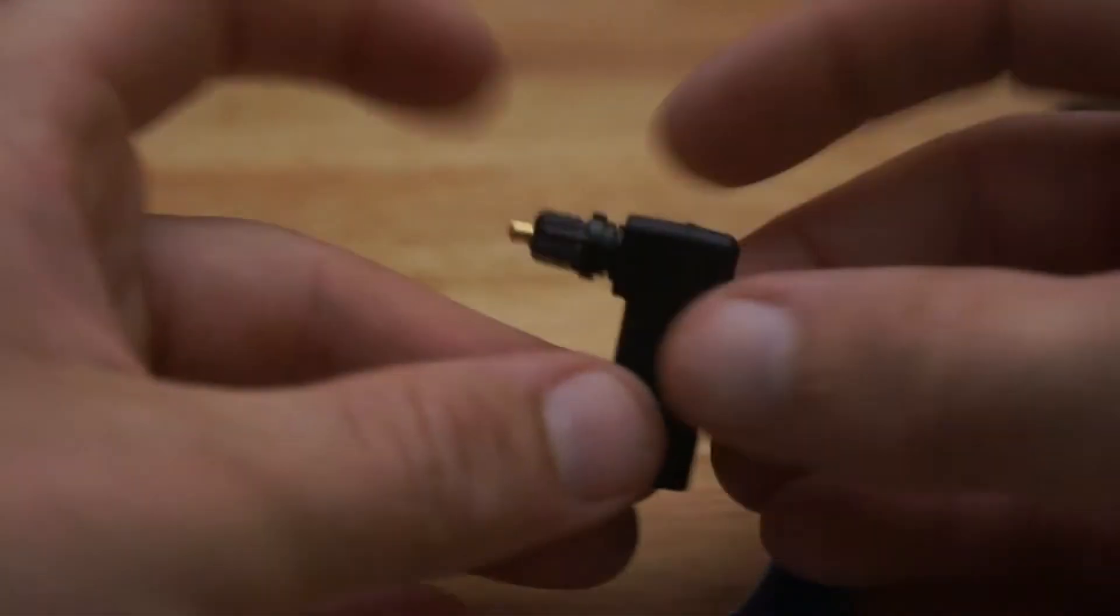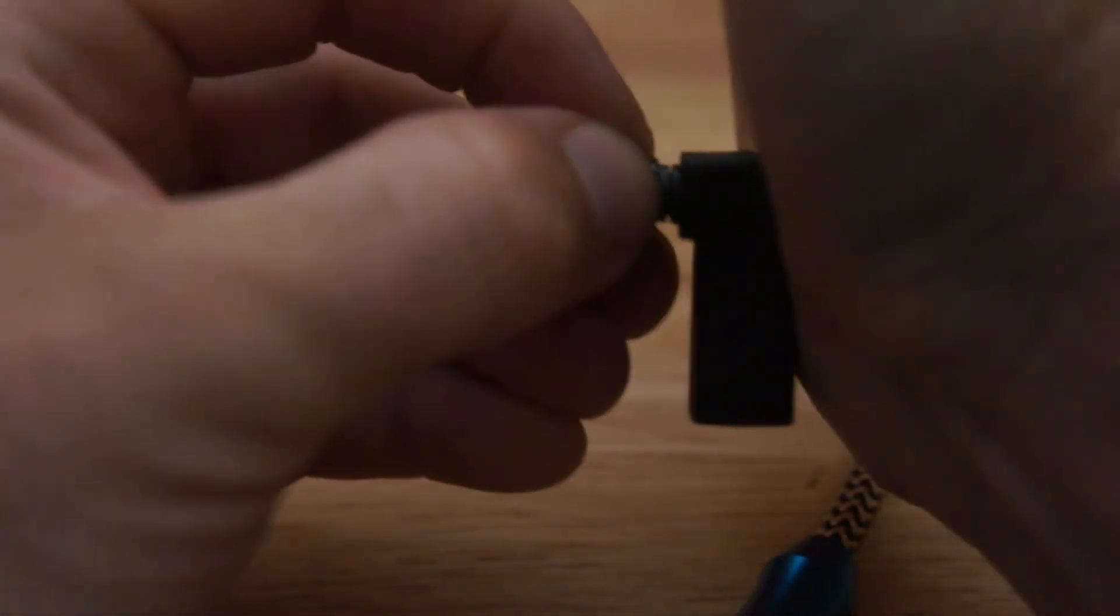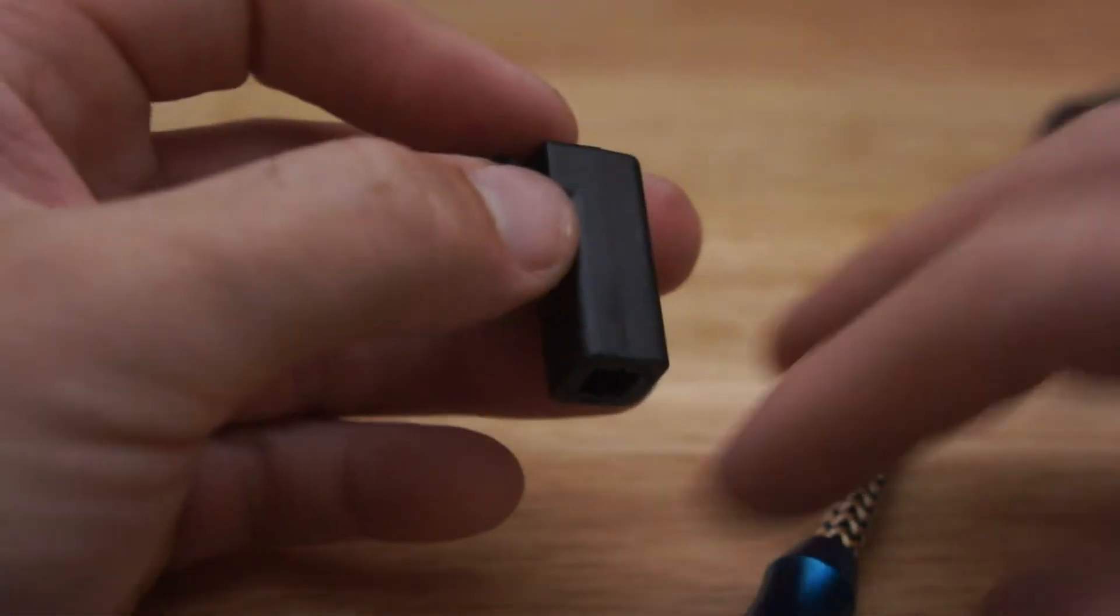So that's where a Right Angle Adapter is really handy. You've got this part that will go inside the connection, and now it's about a centimeter—10mm as opposed to 25-30mm. You'll be able to get your TV closer to the wall without damaging the cables.